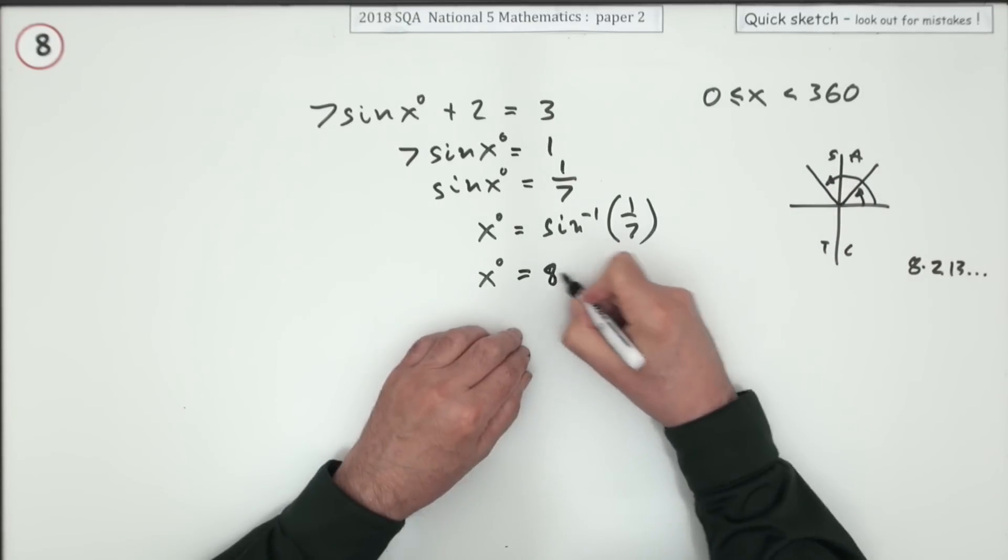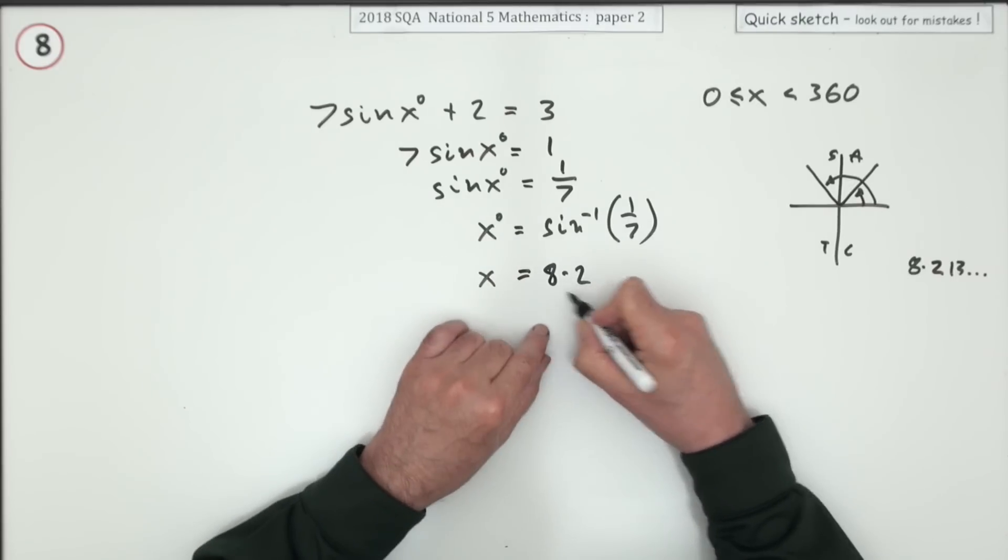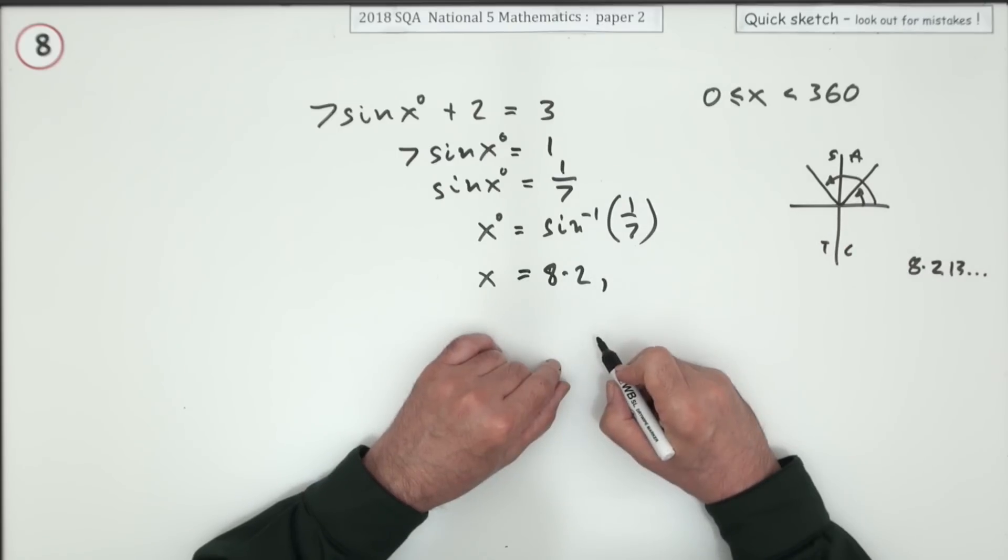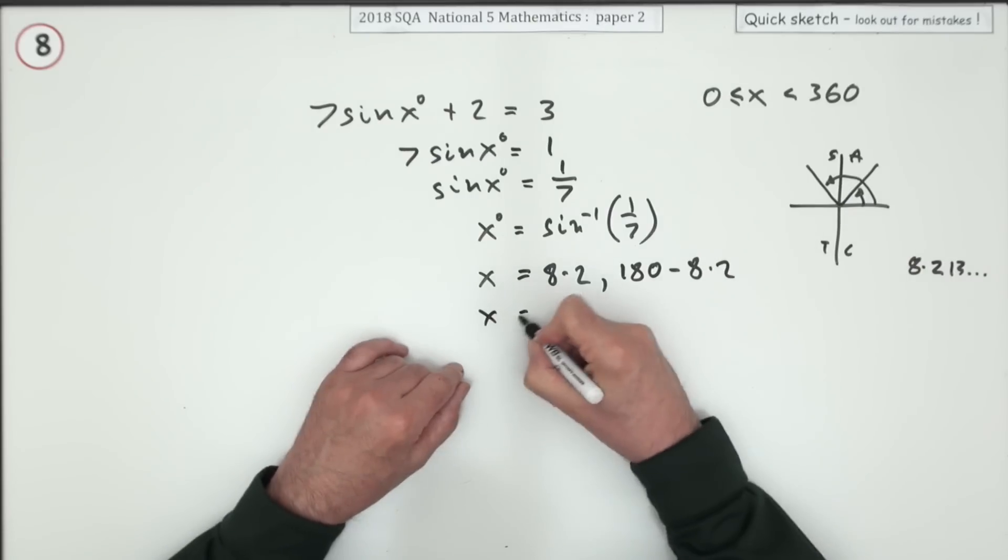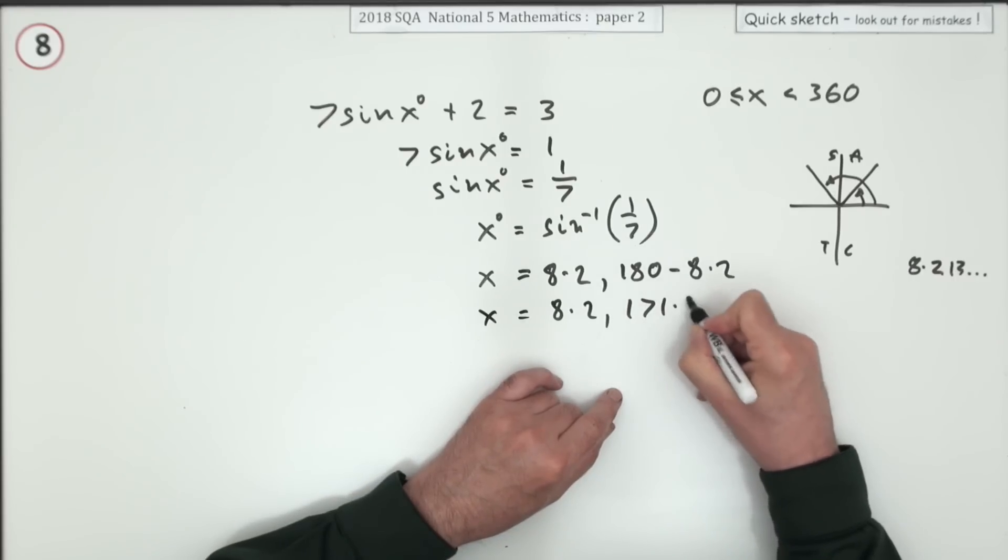So your answers are either 8.2, I think at this point I'll just take that away, 8.2 or 180 minus that. I'll show that working: 180 minus 8.2. So x is 8.2 or 171.8.